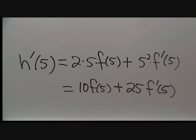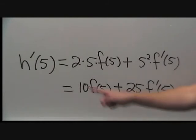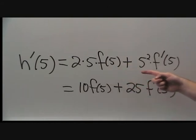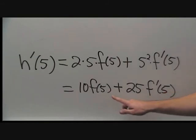Finally, to conclude our problem, we need to evaluate h prime at x equals 5. That is, 2 times 5 times f of 5 plus 5 squared times f prime of 5. That simplifies to 10 f of 5 plus 25 f prime of 5. And that's our final answer.